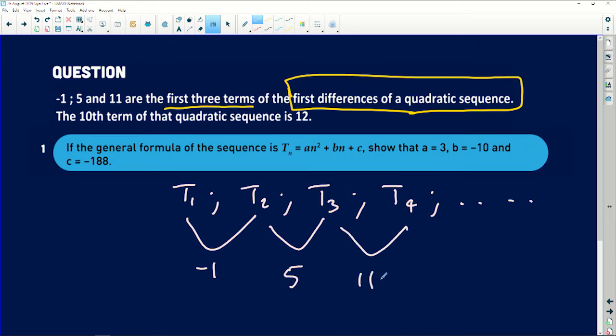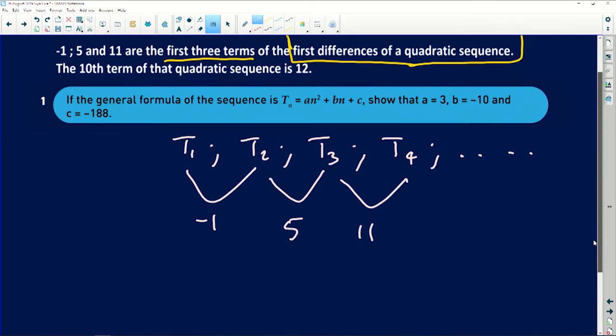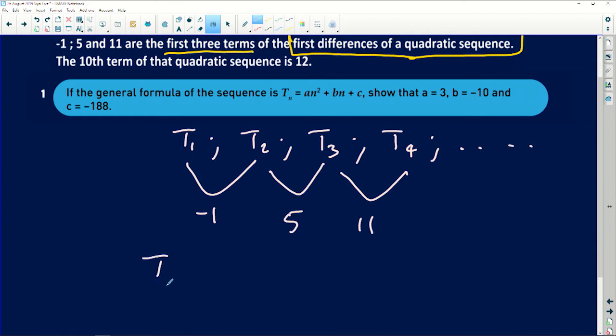And then the 10th term of that quadratic pattern is 12. So term number 10, which is equals to a into 10 all squared plus b into 10 plus c will be equal to this is equals to 12. So let me remove this equal sign here and this will be 100a plus 10b plus c is equals to 12.